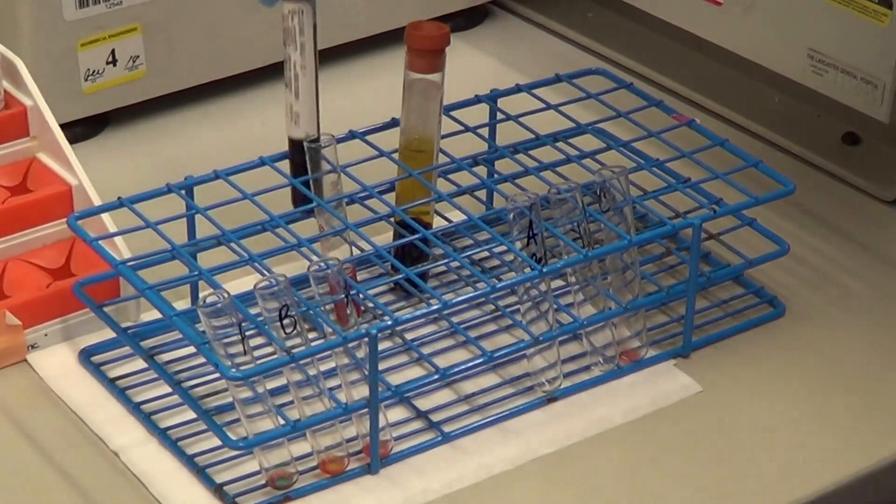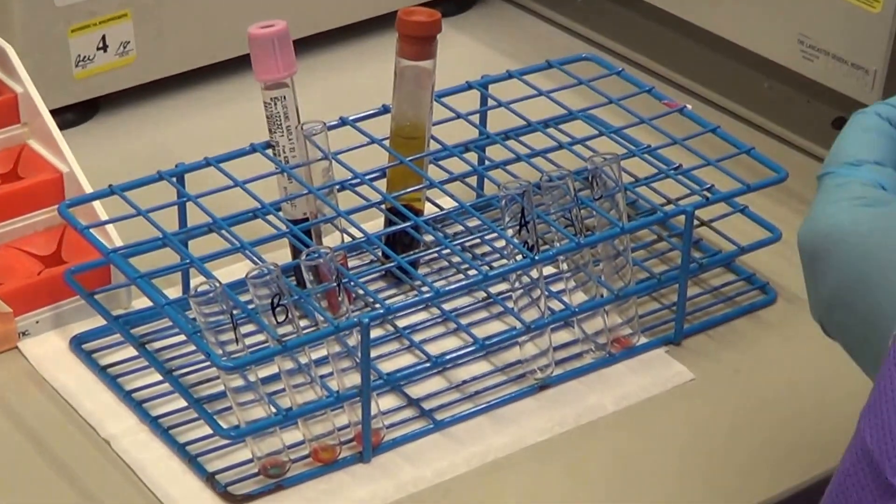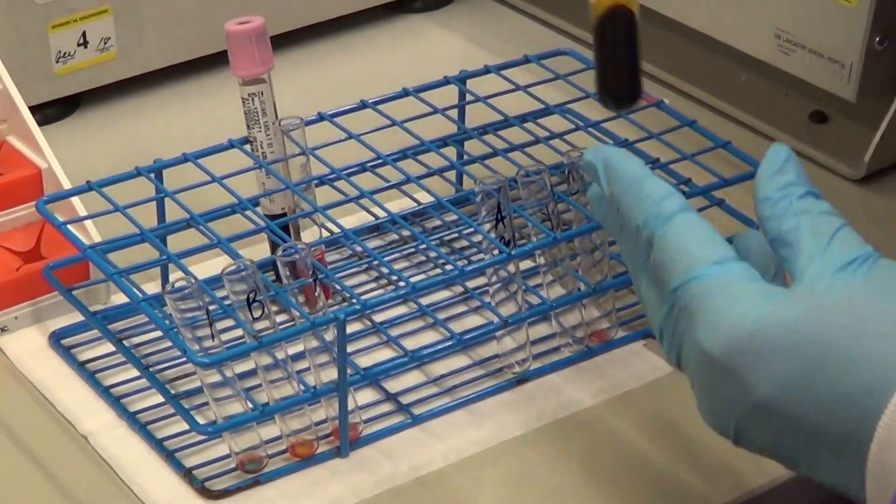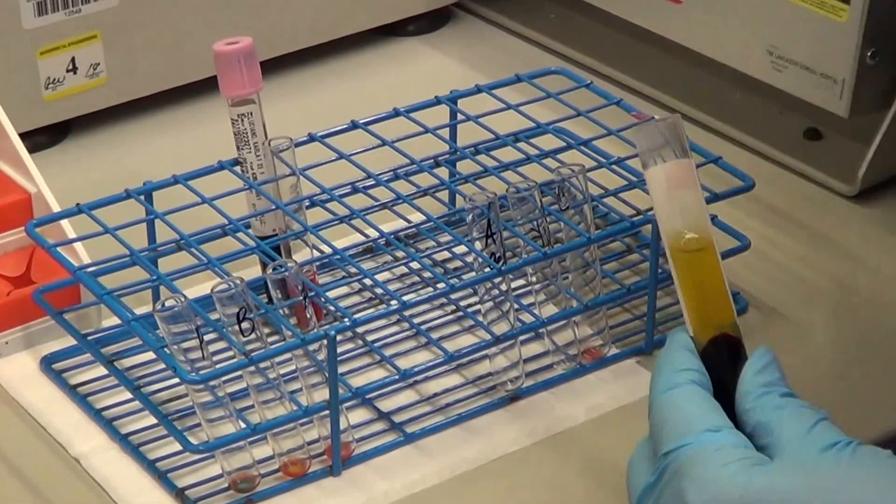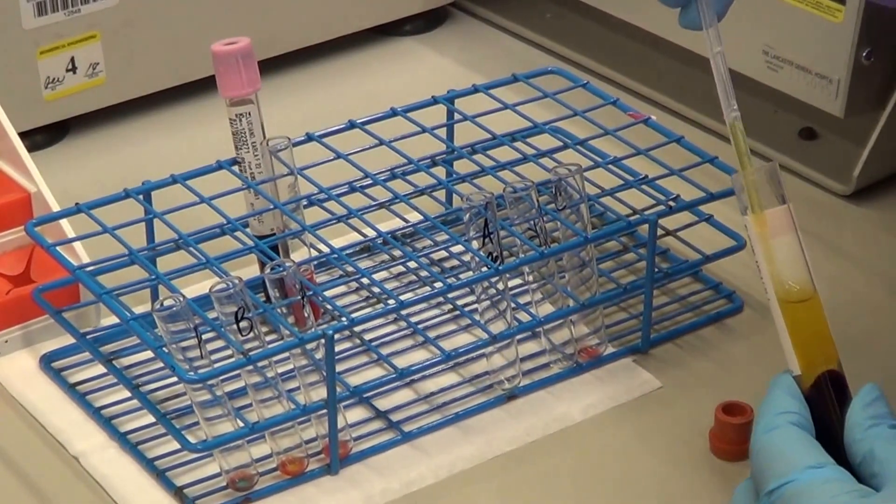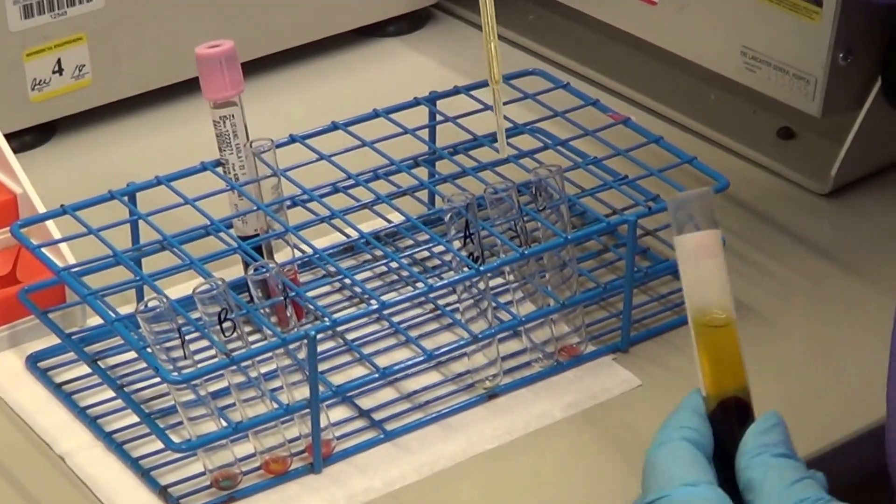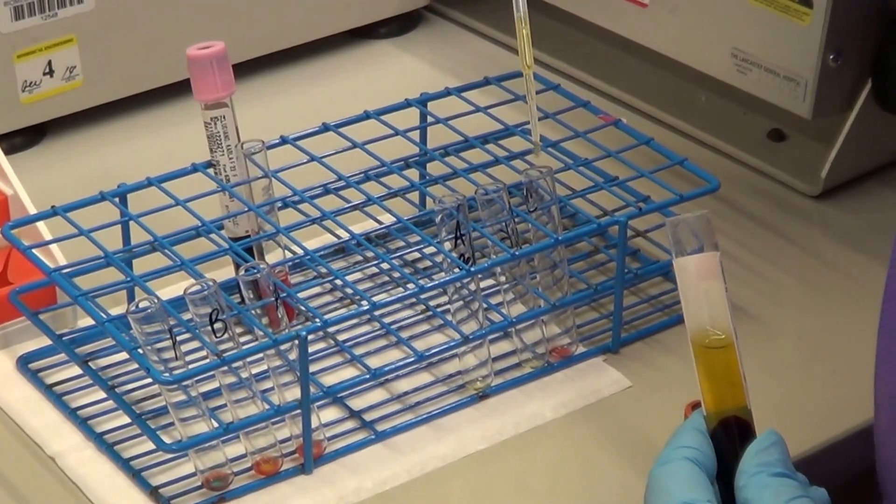The next step is to add two drops of your patient's serum to your reverse typing test tube. This is to confirm what you get for your blood type. You add two drops to each back type tube.